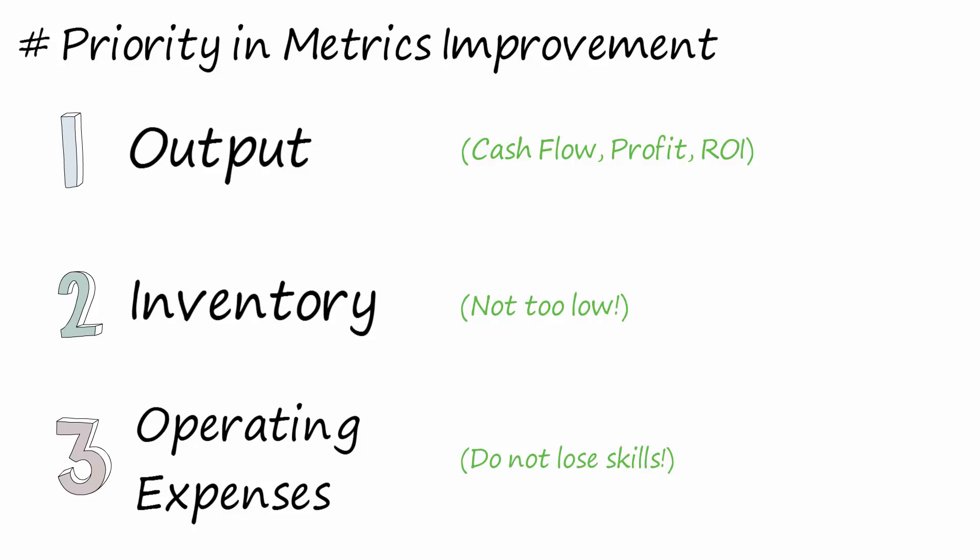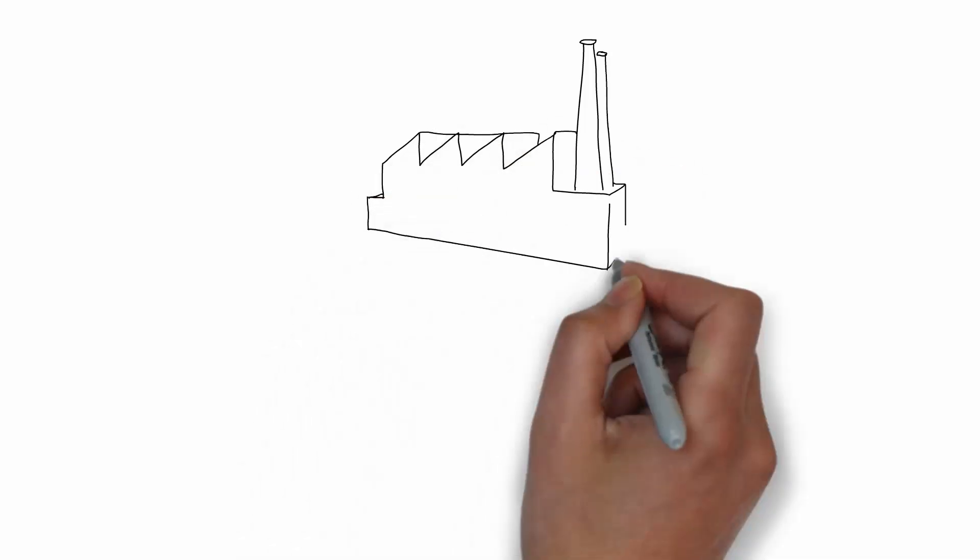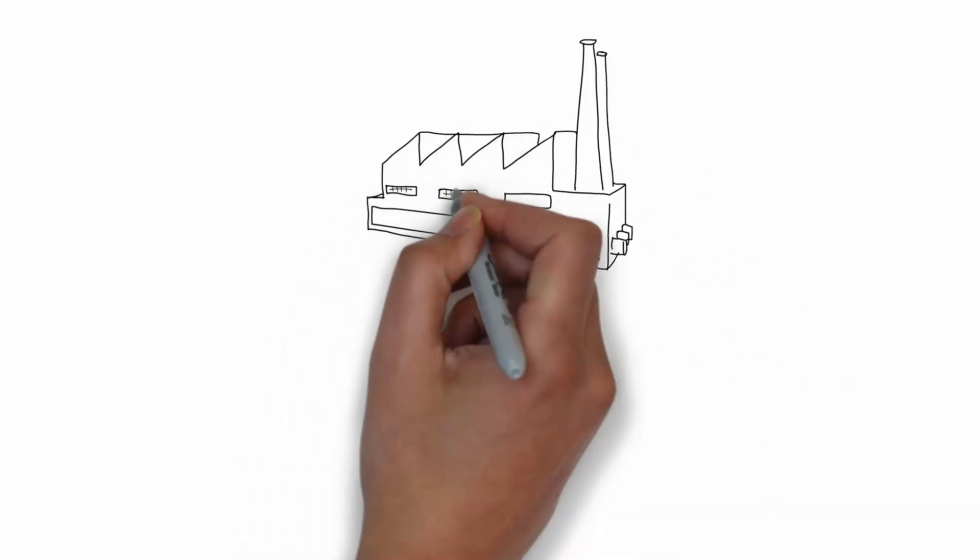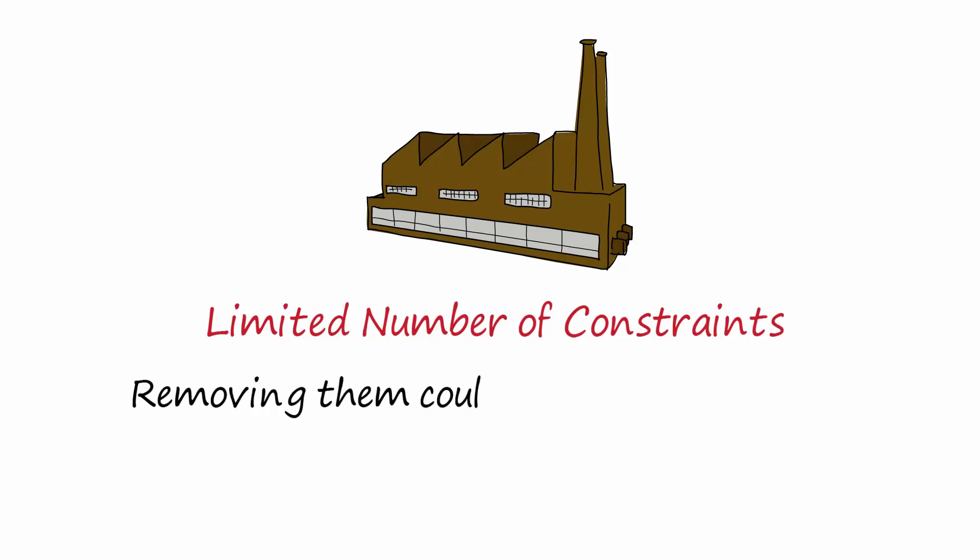Having clarified what the goal of the companies must be and how to measure it effectively, let's move on to the improvement cycle based on the theory of constraints. According to Goldratt, most companies have a limited number of constraints and removing them could make infinite profits. To understand well the importance of the constraint on the production flow, deepen the drum-buffer-rope theory.